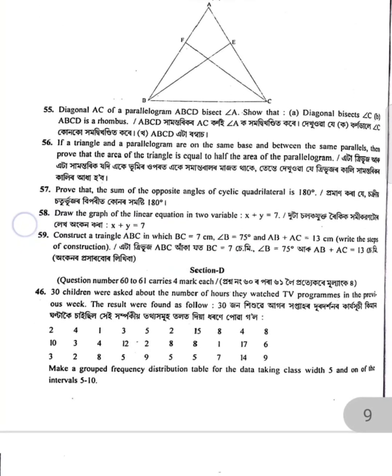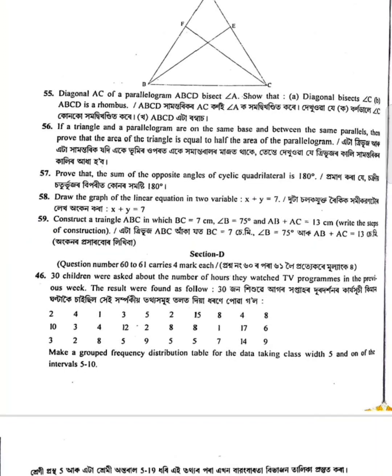A cyclic quadrilateral has its opposite angles summing to 180 degrees. Draw the graph of the linear equation in two variables: x plus y equals seven. In triangle ABC, BC is 07 centimeters, D is 075, and AB plus AC is given.